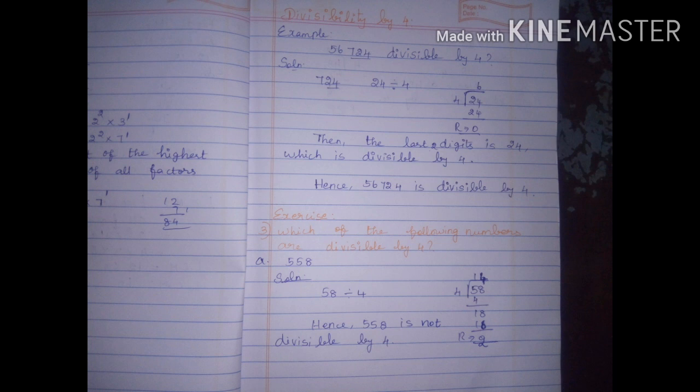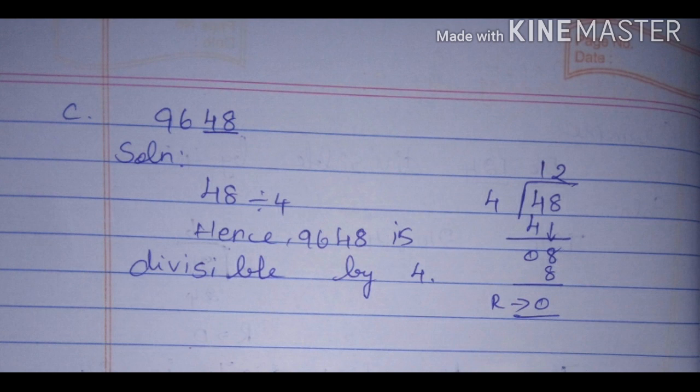Next sum: 9648. Solution - take the last two digits: 48 divided by 4. 1 times 4 is 4, subtract 0. 2 times 4 is 8, subtract 0. 12 times 4 is 48. Hence, 9648 is divisible by 4. Now, if we check the last two digits of 4200, the last two digits are 00, so it is divisible by 4.